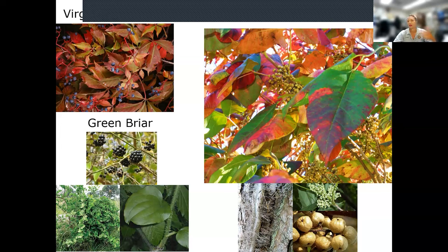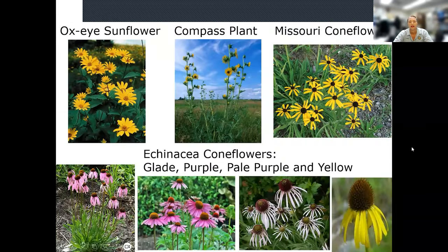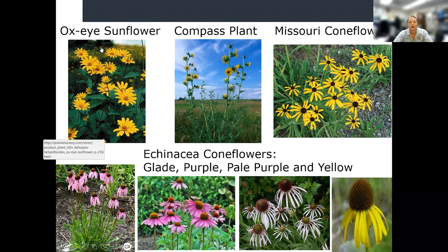Birds will sit on a fence, poop out those seeds, and then you get more poison ivy wherever the seeds land. Right now sunflowers are making seeds that birds like. The yellow and pink composites — ox-eye sunflower, compass plant, Missouri coneflower — are great choices. The Missouri coneflower is great for near a mailbox because it only gets a couple feet tall, stays in one clump, and blooms a long time.